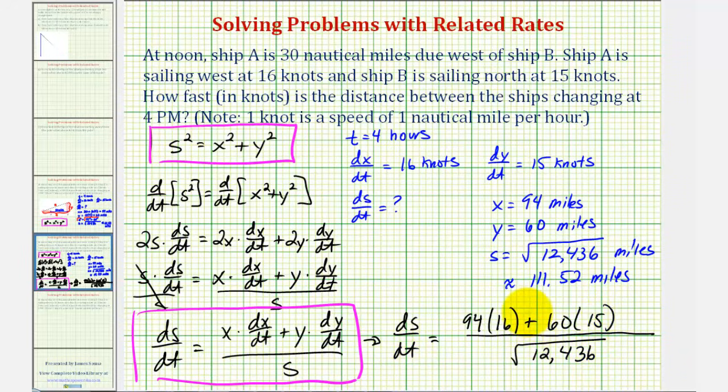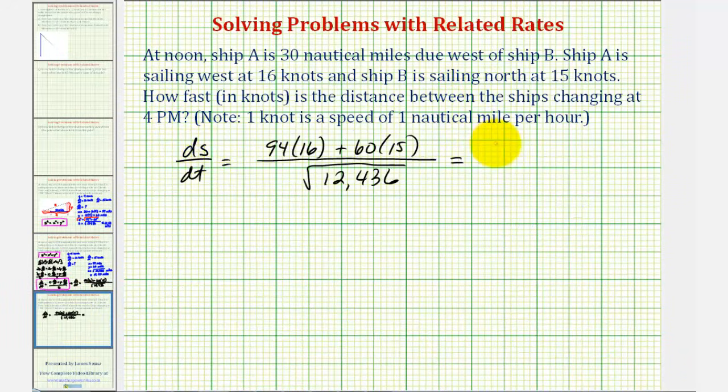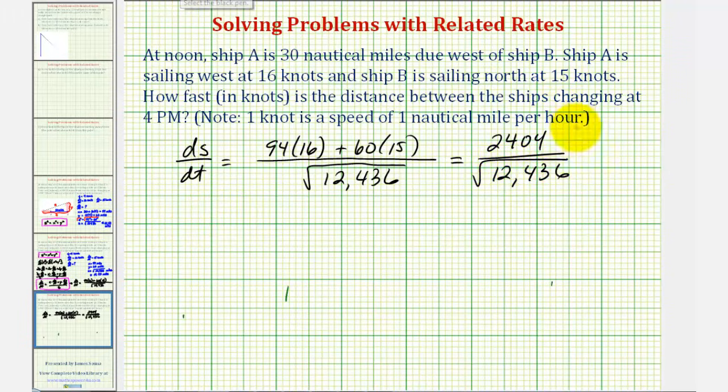Let's continue on the next slide. This comes out to 2,404 divided by the square root of 12,436 and this would be knots. Let's get our decimal approximation for this.